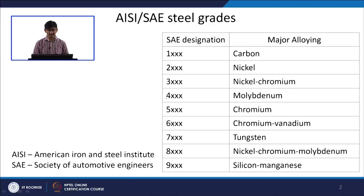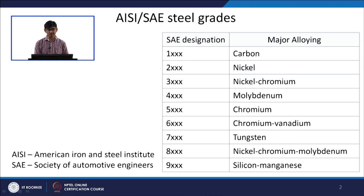In the SAE designation, there are different numbers given followed by XXX. The first digit specifies the major alloying element. For example, if it is only plain carbon steel — where only carbon is added as an alloying element — the first digit will be 1, with three more digits remaining.